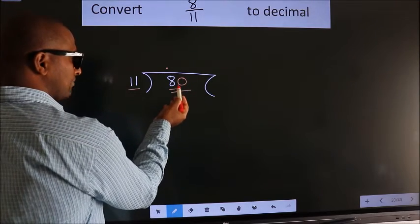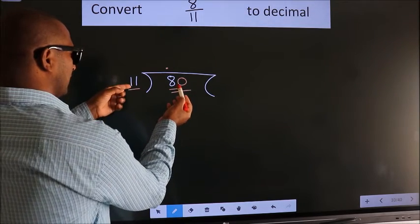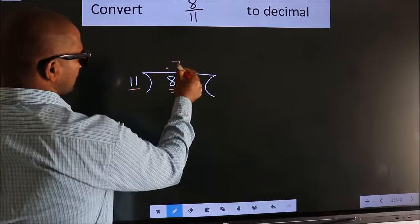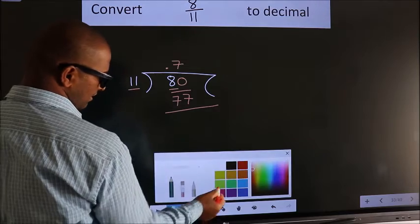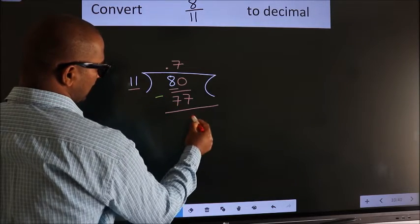So 80. A number close to 80 in 11 table is 11 7's, 77. Now we should subtract. We get 3.